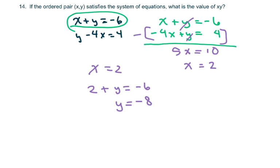And then when you multiply it, they want XY. So that's two times negative eight, that gives you negative sixteen. Thank you and have a nice day. Bye-bye.